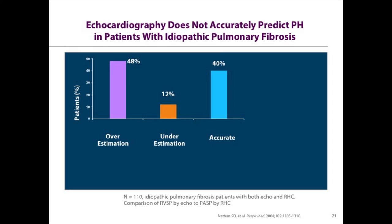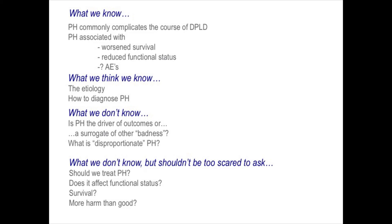ECHO tends to overestimate but can also underestimate true PA pressures, so in many cases it's inaccurate. It only gives you the PA systolic pressure, not the mean PA pressure or other indices. To underscore the point — you always need a right heart cath. We know PH commonly complicates the course of interstitial lung disease; it's associated with worse survival, reduced functional status, and possibly acute exacerbations. What we think we know is the etiology and how to diagnose PH. What we don't know is whether PH is the driver of outcomes or a surrogate of other badness in the lungs. We don't like the term disproportionate pulmonary hypertension, but we still all talk about it, and we don't know what it is.